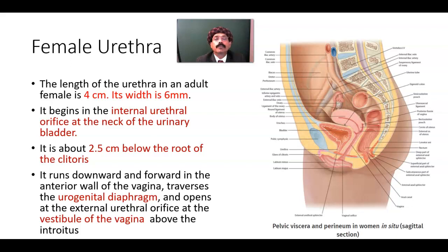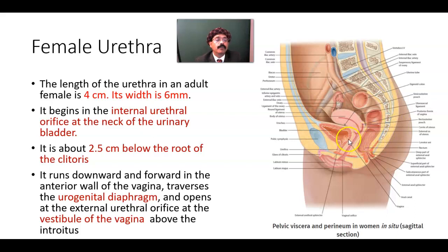The female urethra has a length of about 4 cm in the adult and its width is around 6 mm. If you look at the sagittal section of the pelvic viscera and perineum in women, we can identify the female urethra — 4 cm in length and around 6 mm in width.